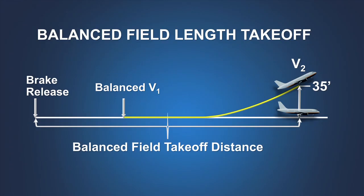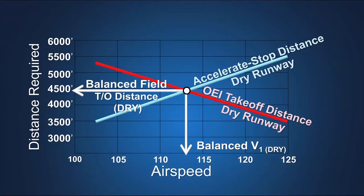Typically, the minimum field length required for takeoff in a two-engine turbojet transport category airplane is based on the balanced field length concept, where the accelerate stop distance is equal to the one-engine-inoperative takeoff distance. The balanced field length can be obtained when, for a given takeoff weight, a V1 speed is selected such that these two distances are equal.